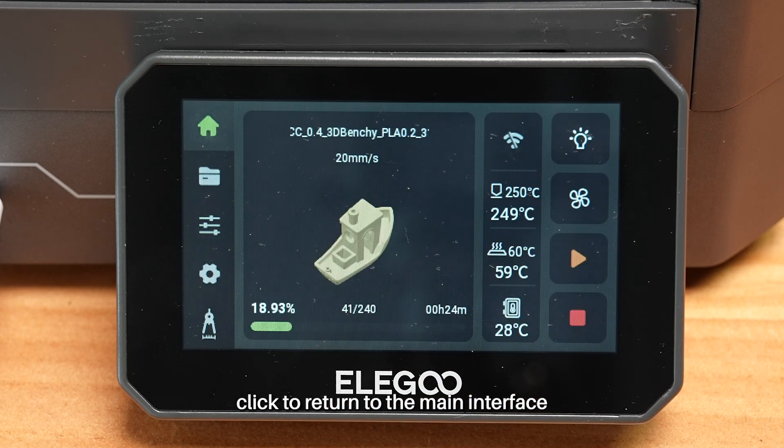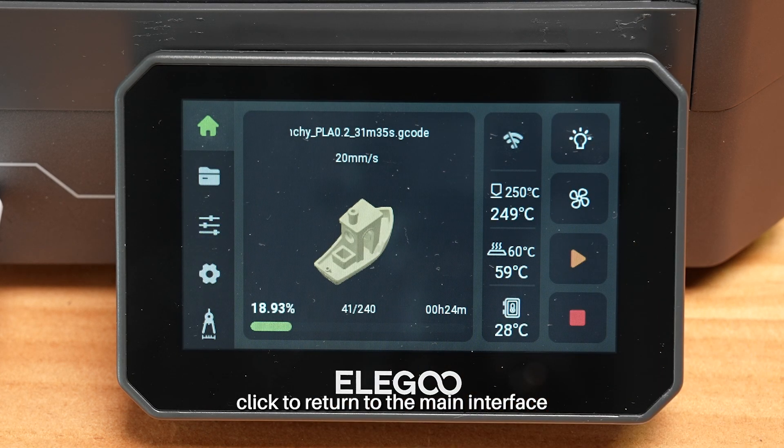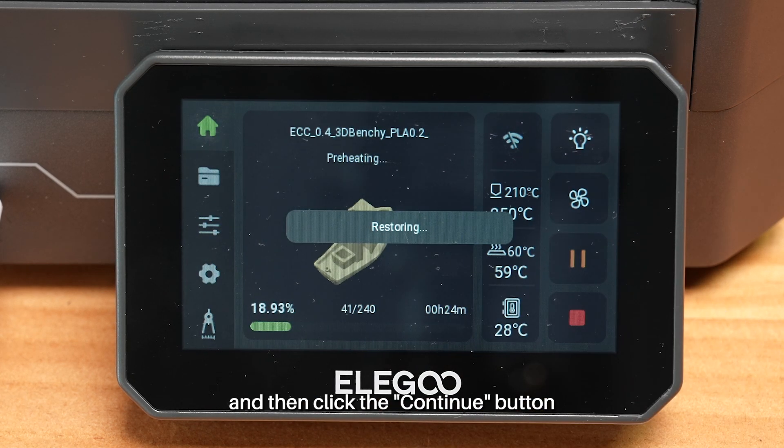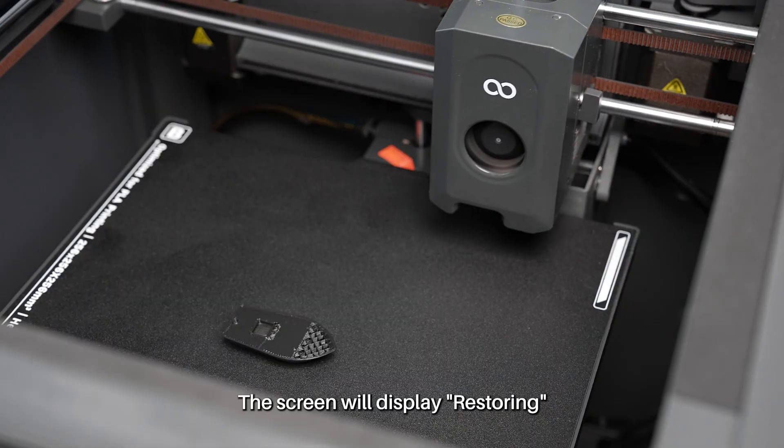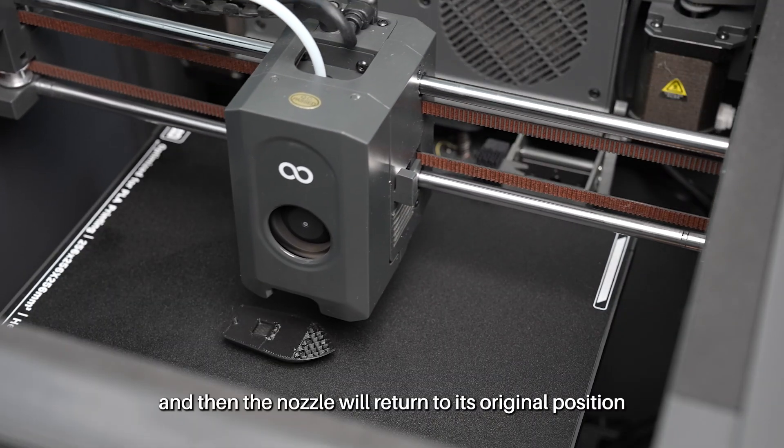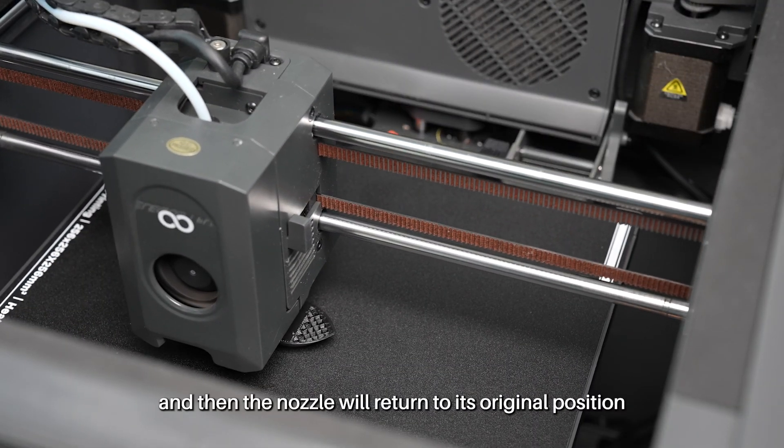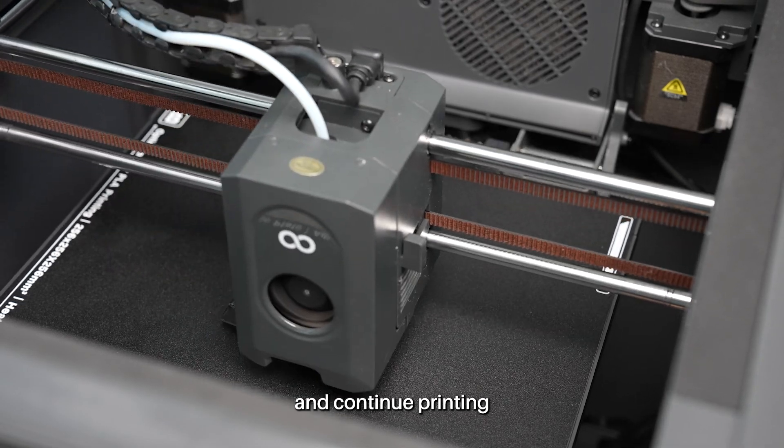Finally, click to return to the main interface and then click the continue button. The screen will display restoring and then the nozzle will return to its original position and continue printing.